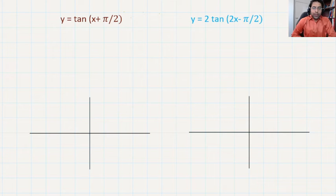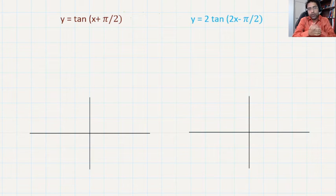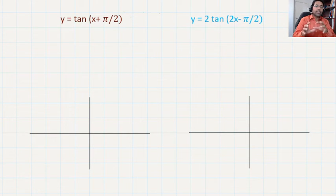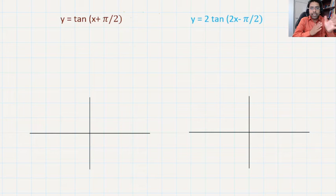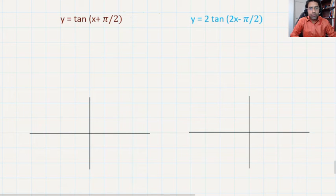Welcome to math. In this video we are going to plot y = tan(x + π/2) and y = 2·tan(2x - π/2). In the first one we are just changing the phase from the parent graph, and in the second one we are changing both the period and the phase. Even though you can see there is a 2 before tan, that 2 doesn't have any influence on amplitude.